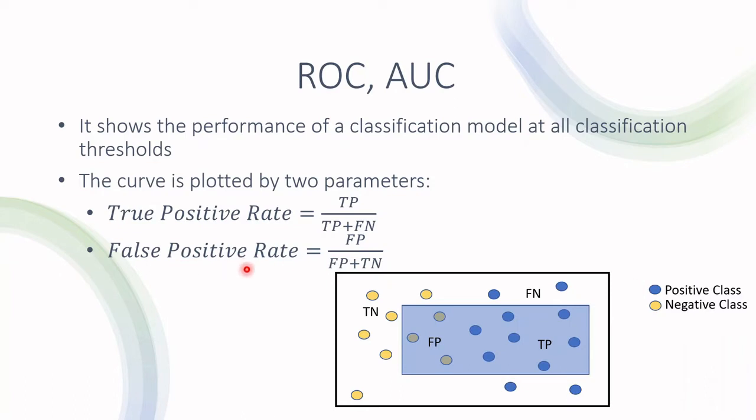The false positive rate is false positives divided by false positives and the true negatives. So this parameter, if we would like to say this in words, would be how many instances out of the negative class were incorrectly classified.